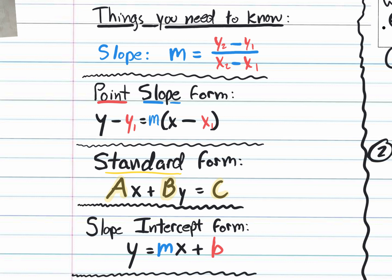Let's begin with something we're really comfortable with — slope-intercept form: Y equals MX plus B. Why do they call it slope-intercept? Because when it's organized like this, you can clearly see the slope, which is M, and the Y-intercept, which is B. That's why it's called slope-intercept form.